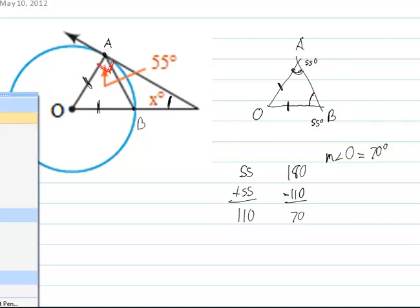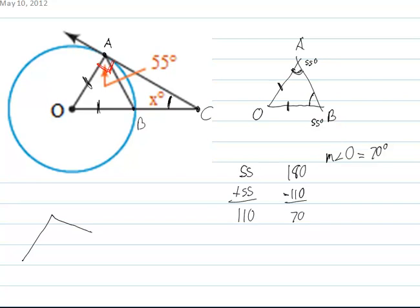So I'm going to redraw this triangle, I'm going to call this point here, you can call it anything you want, I'm going to call it C. I'm going to draw triangle O, A, C. And again, this is a right angle at angle A.